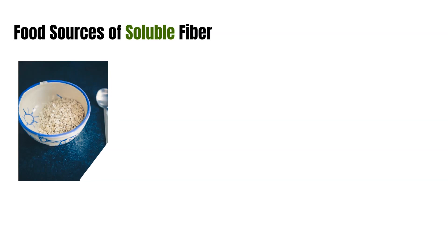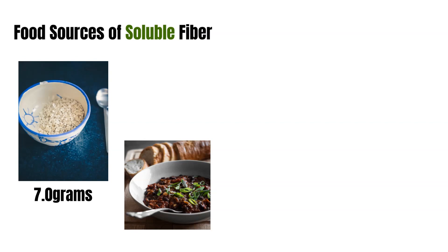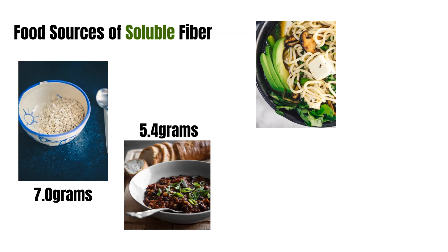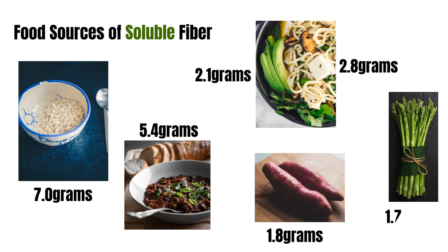Here are practical food sources of soluble fiber. Oat bran: half a cup gives you about 7 grams of fiber — have that in the morning and you're almost a third of the way there. Black beans: three quarters of a cup gives about 5.5 grams of fiber. Lima beans go roughly the same. Tofu has just under 3 grams of fiber per serving — about three quarters of a cup. Half an avocado gives 2.1 grams of insoluble fiber. Half a cup of sweet potato gives 1.8 grams, and half a cup of asparagus gives almost 2 grams of soluble fiber. These are really practical sources you can easily incorporate into your diet.